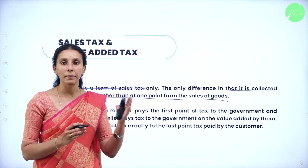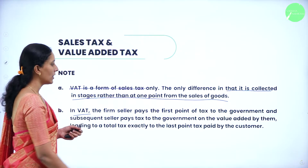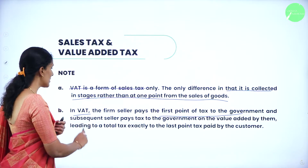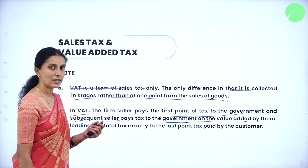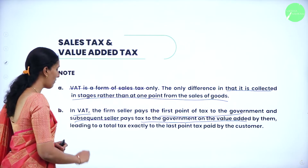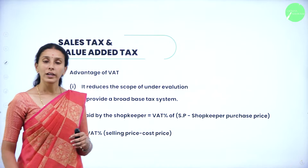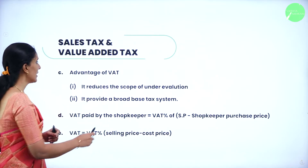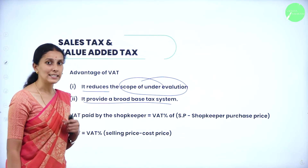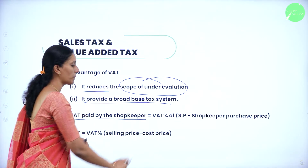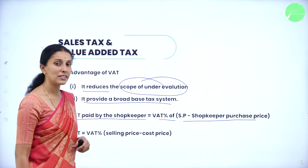The total tax will be paid to the government. In VAT, the first seller pays the tax to the government at the first point. Subsequent sellers pay the tax added for the same value — hence it is called value added tax. Finally, the total tax at the last point is paid by the customer. The advantages of VAT are that it reduces the scope of under-evaluation and provides a broad base tax system.